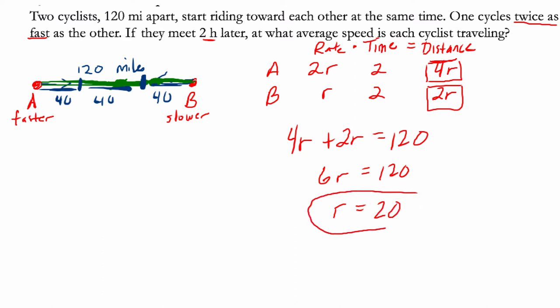All right. Well, here, that means the rate of the slower cyclist is 20, and the faster cyclist is twice that, which is 40. 40, I guess, miles an hour in this case.